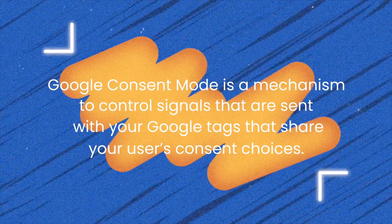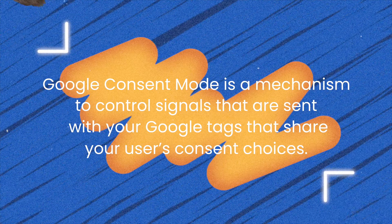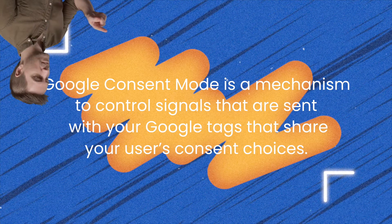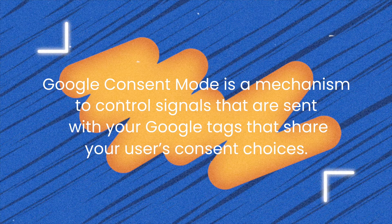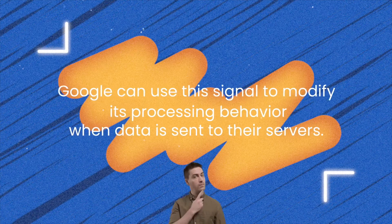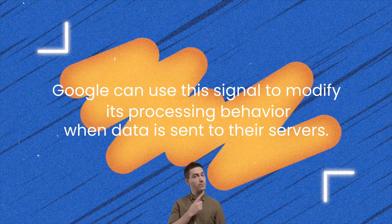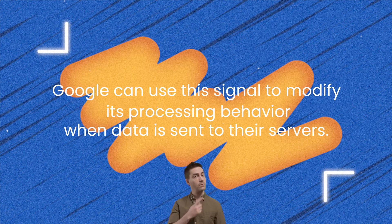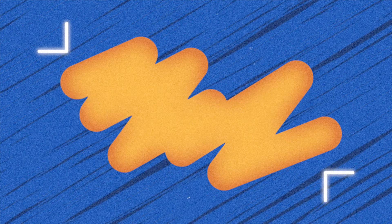What is Google Consent Mode? Google Consent Mode is a mechanism to control signals that are sent with your Google tags that share your users' consent choices. Google can use this signal to modify its processing behavior when data is sent to their servers.